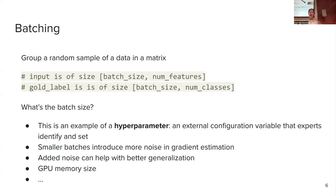When we batch data, the input becomes a matrix of batch size times number of features — all those feature vectors are stacked row-wise. If you have many such matrices plus weight matrices stored on your GPU, the number of values becomes too large and you will see a CUDA memory error. So you can't just use an arbitrarily large batch size.